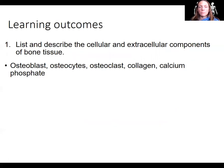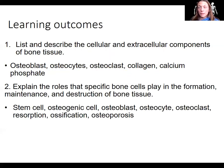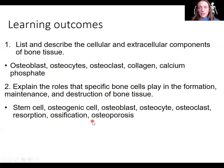What we've done here is list and describe the cellular and extracellular components of bone tissue, including the different cell types as well as collagen and calcium phosphate. We also explained the roles of specific bone cells in the formation, maintenance, and destruction of bone tissue: osteoblasts, osteocytes, osteoclasts, and the stem cells known as osteogenic cells. Ossification is a term we'll look at more with bone growth — that's the production of bone tissue, the making of bone tissue.